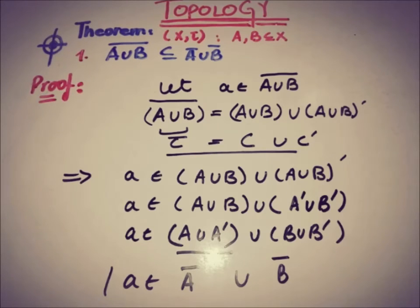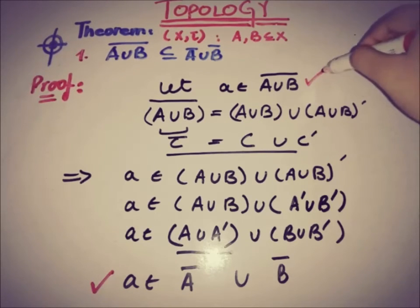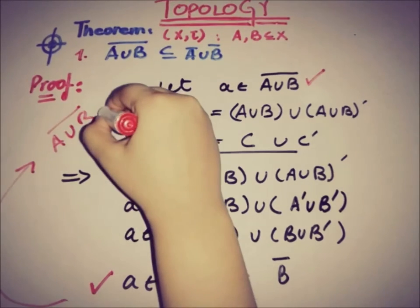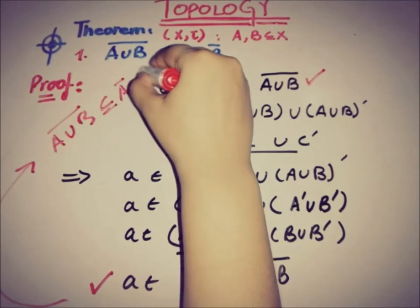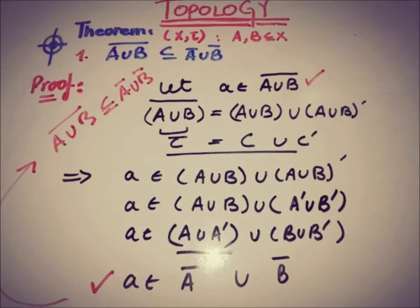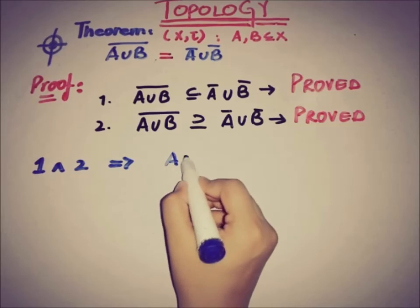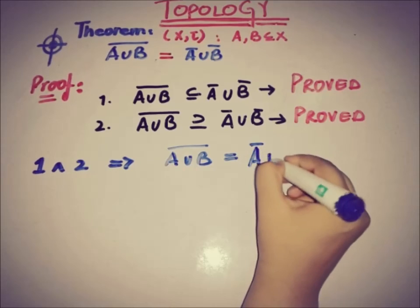So 'a' is a member of A bar union B bar, meaning 'a' belongs to A closure union B closure. This proves the second part. By combining the first and the second part — since A closure union B closure is a subset of A union B closure, and A union B closure is a subset of A closure union B closure — we have proved that A union B closure equals A closure union B closure.